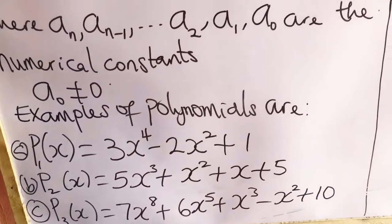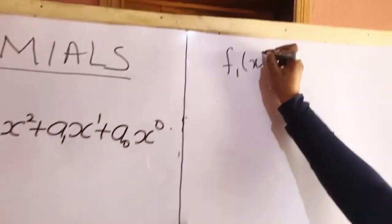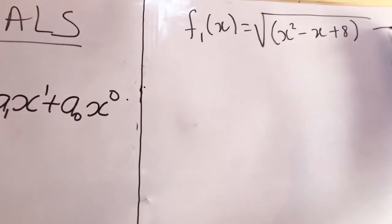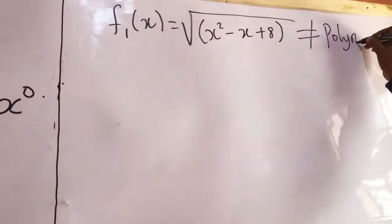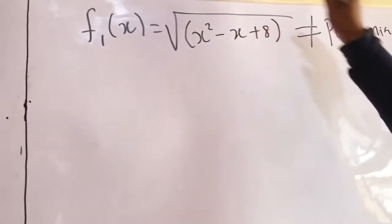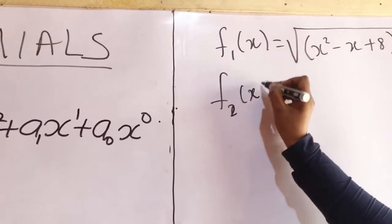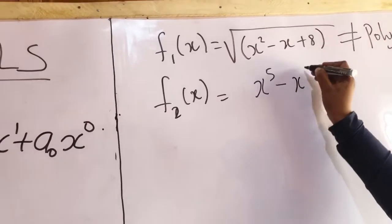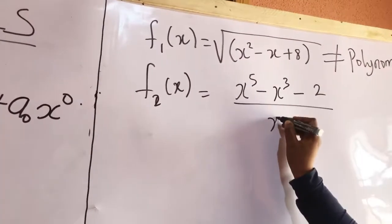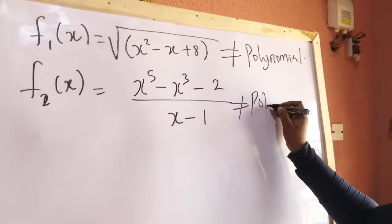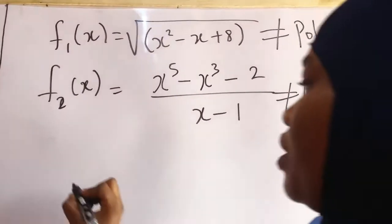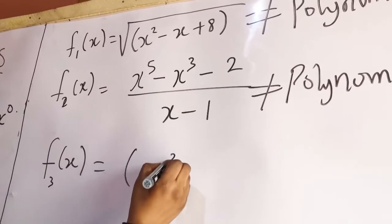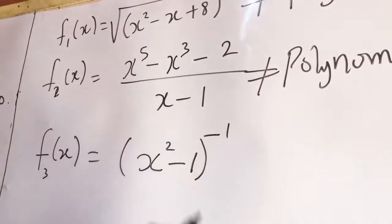And p_3(x) = 7x^8 + 6x^5 + x^3 − x^2 + 10. Now, if you see examples like f'(x) = √(x^2 − x + 8), this is not a polynomial because of the square root. Also, f_2(x) = x^5 − x^3 − 2/(x − 1) is not a polynomial. And f_3(x) = (x^2 − 1)^(−1) is not a polynomial either.